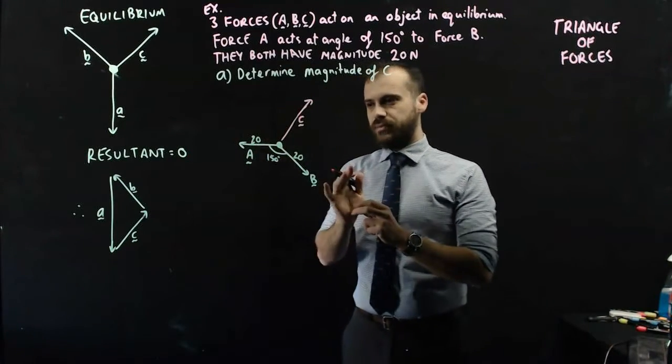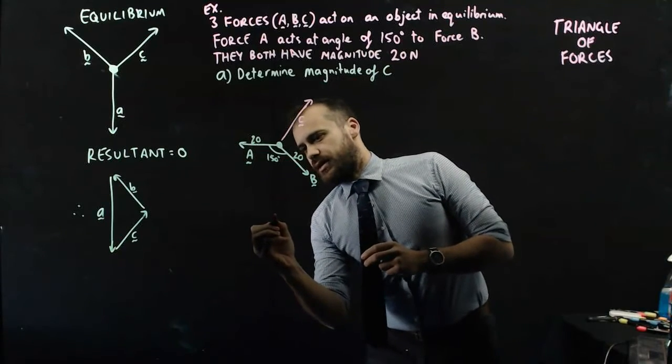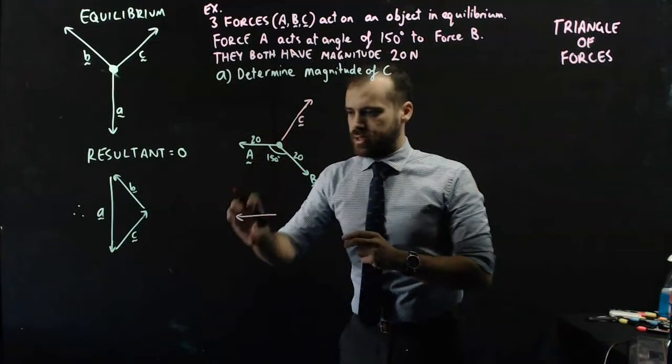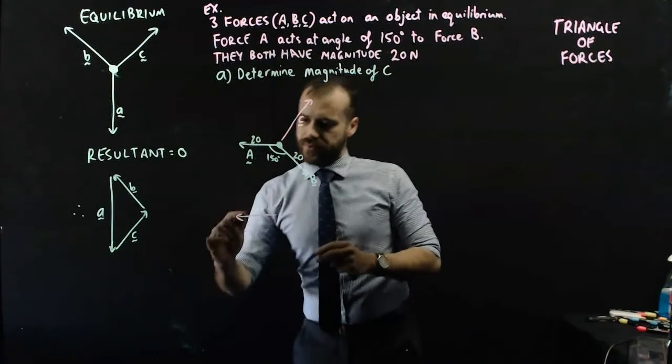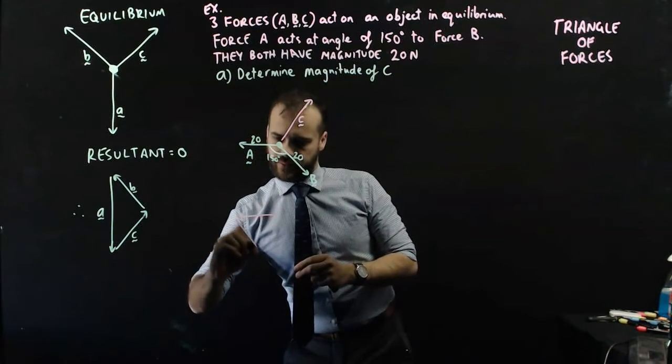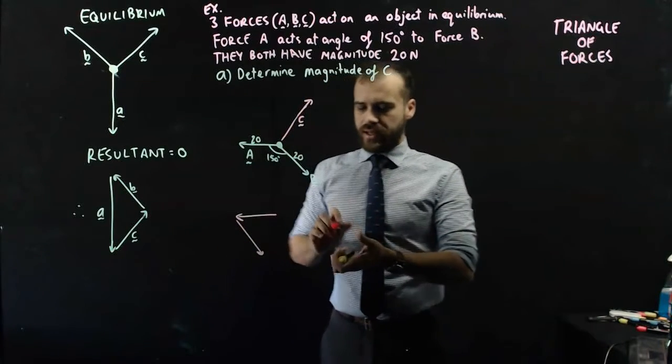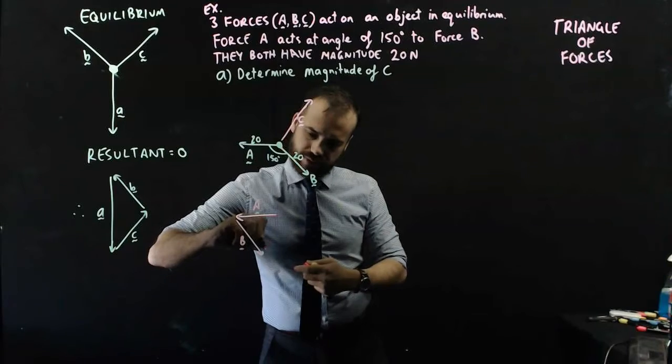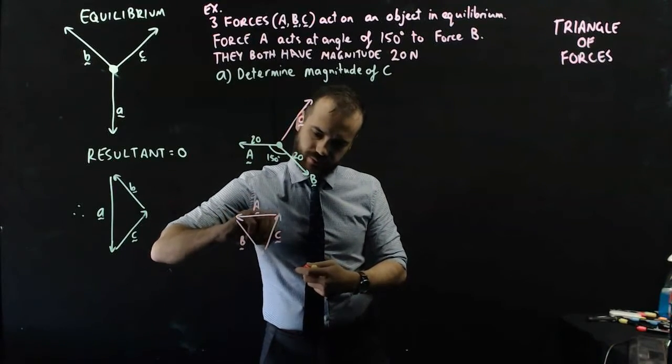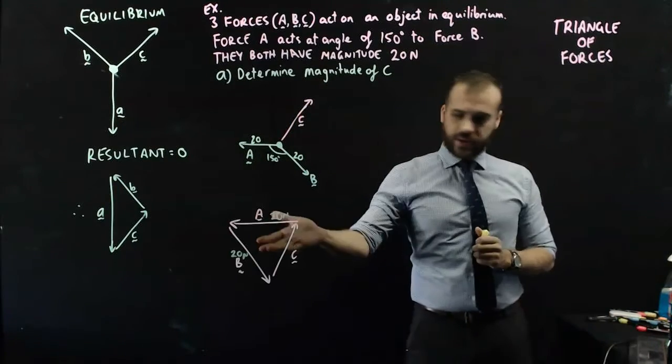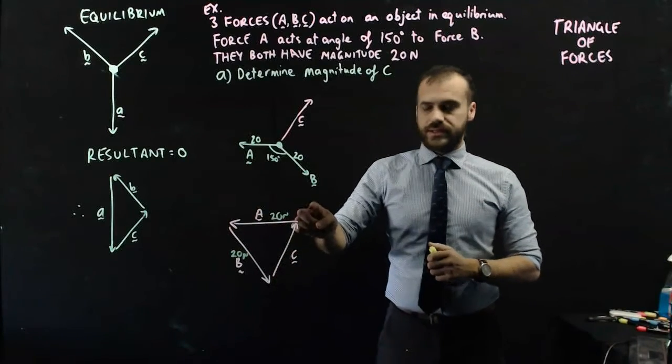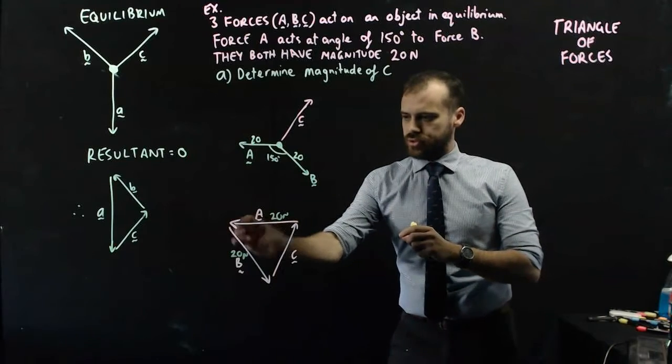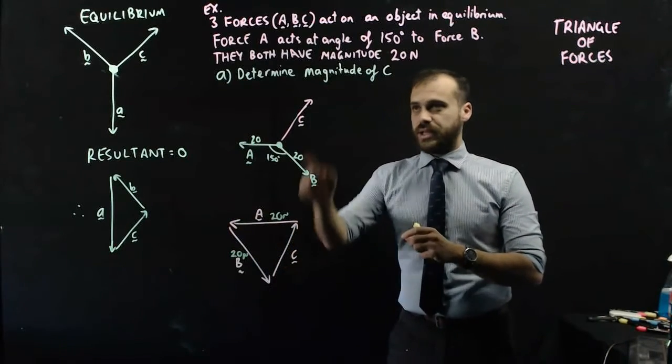I say, right, it's in equilibrium. Therefore, vector A... I can attach vector B to the tip of vector A, like that. And then I get another vector. That's vector A, that's vector B, and now I have this new vector, vector C. I really wish I'd drawn that bigger. There we have it. A, B, and C are all tip to tail, tip to tail. 20 newtons, 20 newtons, I don't know, but that's what I'm trying to find out.